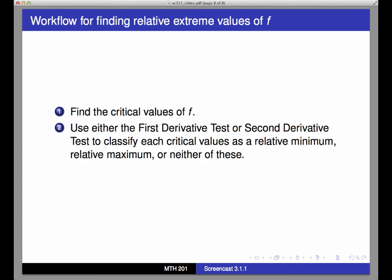So the workflow for finding and identifying local extreme values of a function f goes like this. First, we need to find the critical values of f by taking the derivative of f and finding where that derivative is 0, and finding where it's undefined.